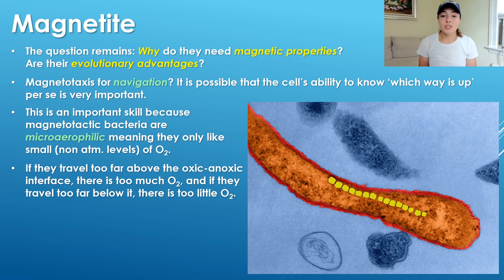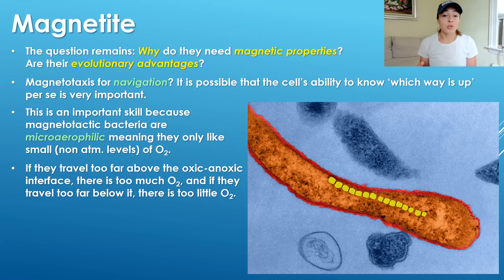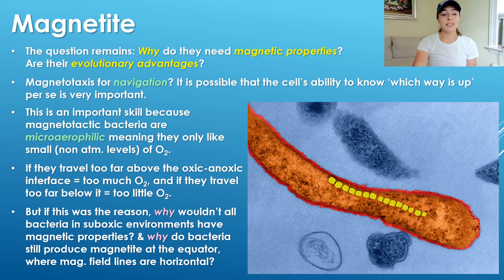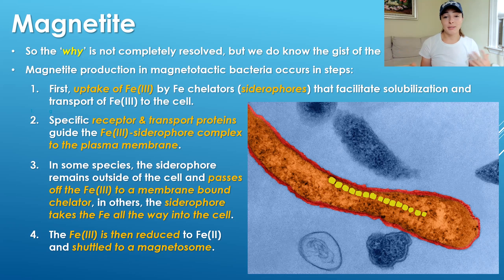The cell's ability to align itself along geomagnetic field lines and basically know which way is up can be very important for the environment in which they live. Because they're microaerophilic, where they are in terms of up and down really matters — they live at the oxic-anoxic interface and want to stay there. However, this reasoning is complicated because if this was the case, why wouldn't all bacteria in these suboxic environments have these properties? And why do these magnetotactic bacteria still produce magnetite at the equator where field lines are horizontal? The why is not completely resolved.